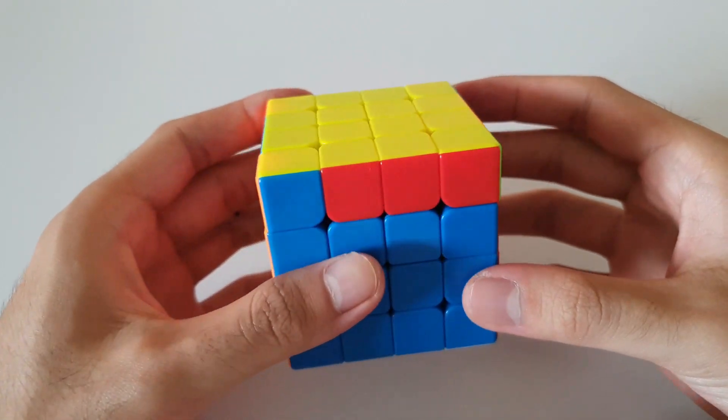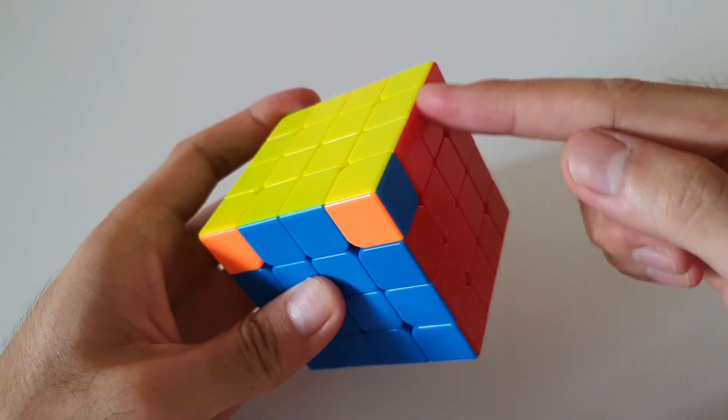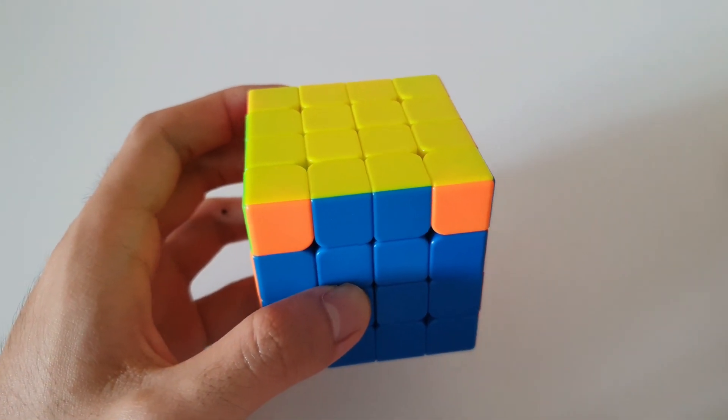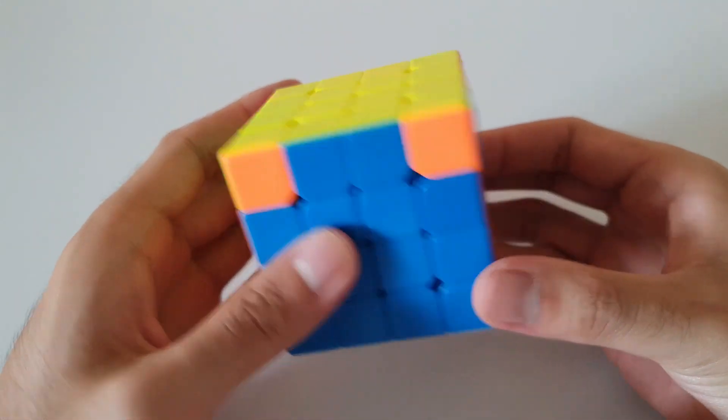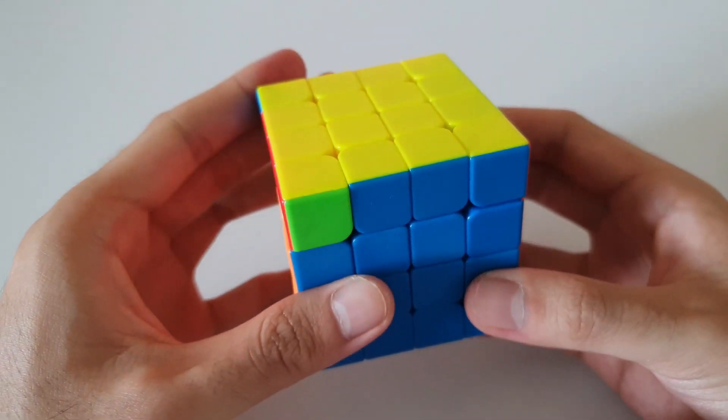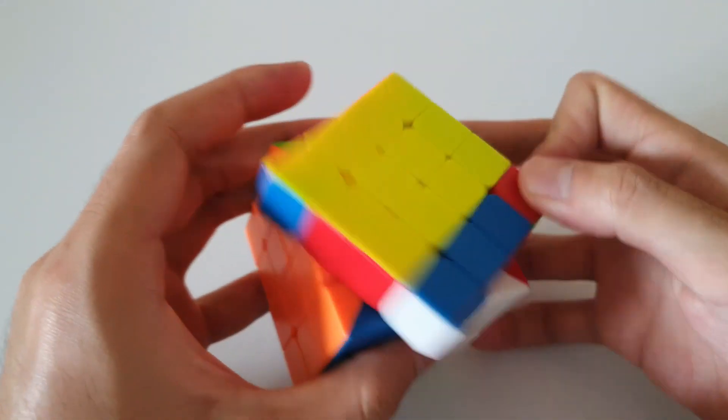However, if I decided to do the PLL parity from this angle, for example, I'd be preserving this bar and this bar. So PLLs with more bars usually results in better PLLs. So if I did PLL parity algorithm from this angle, I get a J perm, which is definitely a lot better than a G perm.